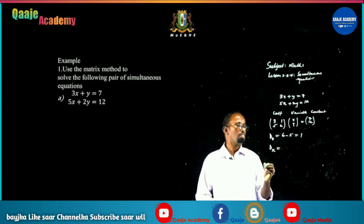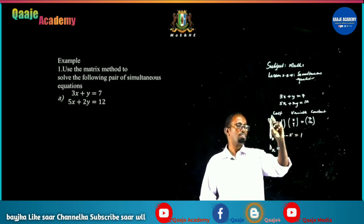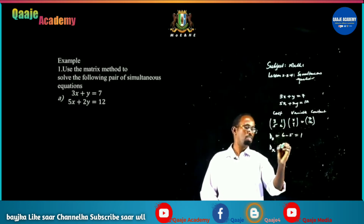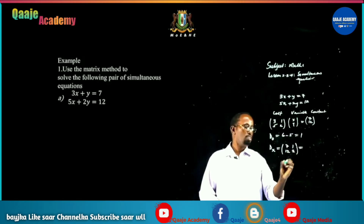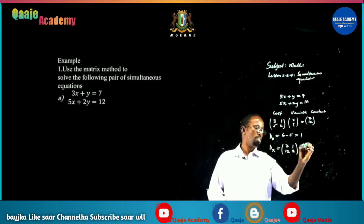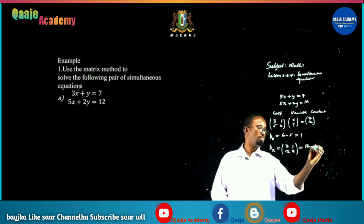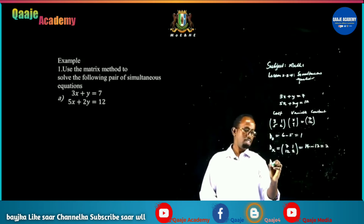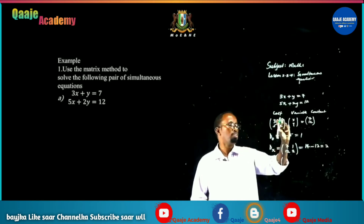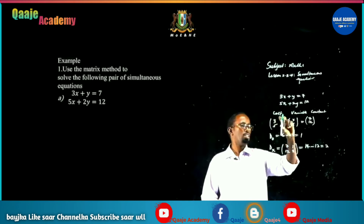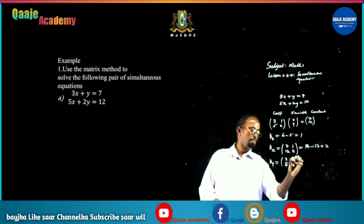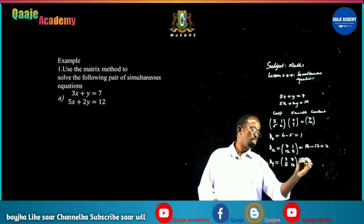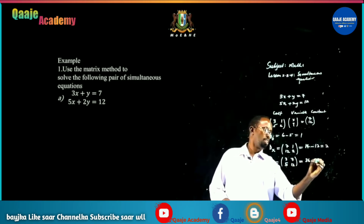For d-sub-x, remove the x column (3 and 5) and substitute 7 and 12: determinant is 14 minus 12 equals positive 2. For d-sub-y, remove the y column (1 and 2) and substitute 7 and 12 with coefficients 3 and 5: determinant is 36 minus 35 equals 1.